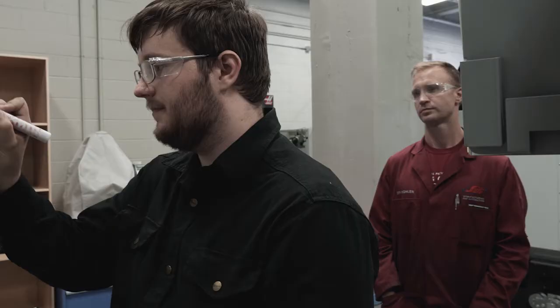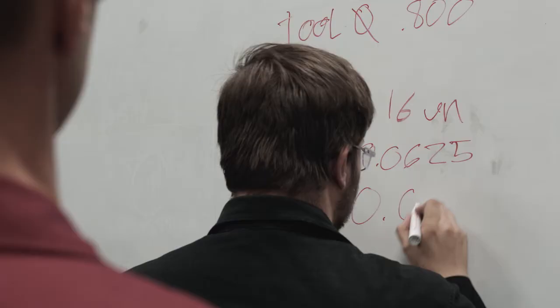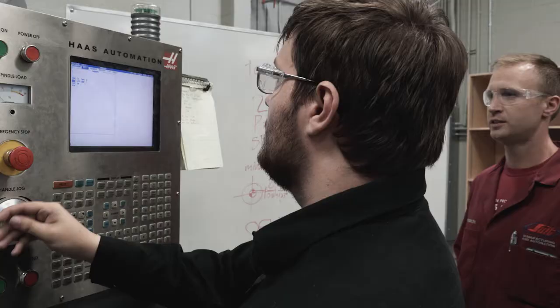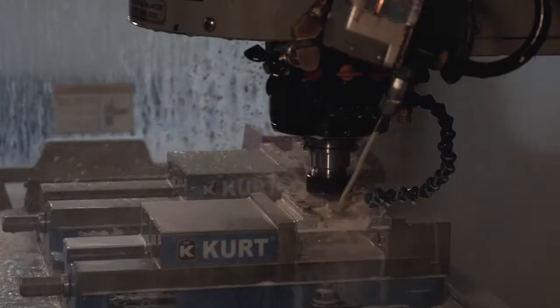When we compete we are provided with a blueprint. We'll get a few minutes to put our thoughts together and write up a procedure, and then we'll go over to our machines and start actually programming out the part. A lot of this has to be done through muscle memory and through just having experience in the lab. That's really where this Gene Haas lab has come so pivotally into my training.